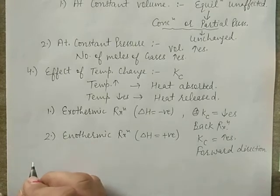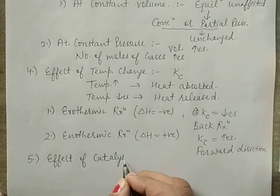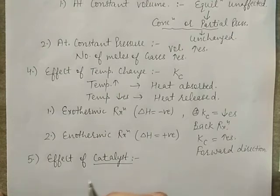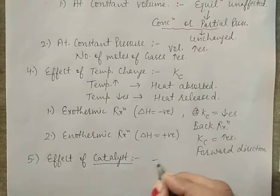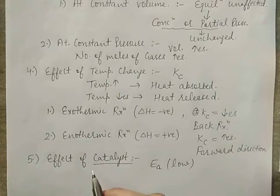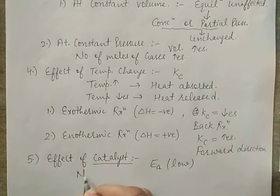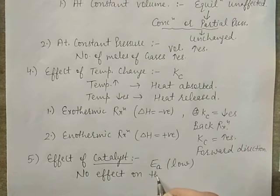Point 5: Effect of catalyst. A catalyst increases the rate of reaction by providing a new pathway with lower activation energy. It affects the rate of both forward and backward reactions to the same extent, so a catalyst has no effect on the state of equilibrium.